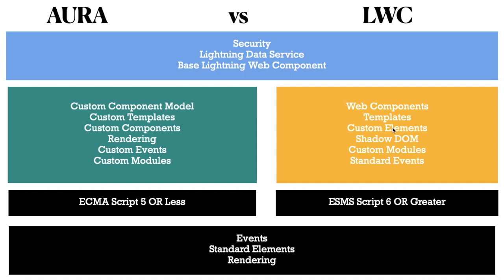We also have the benefit of Shadow DOM for different look-and-feel in hierarchical components. We can create our own custom modules, import and export them - whereas in Aura that was a problem, we had to use Aura's modules. We also have standard events. Aura uses ECMAScript 5 or less, while LWC uses ECMAScript 6 or greater, providing more functionality and better performance.